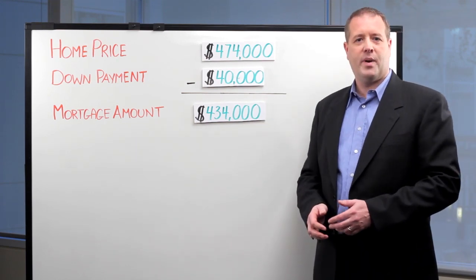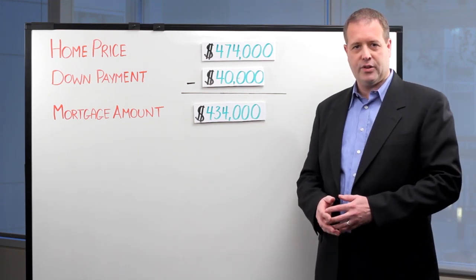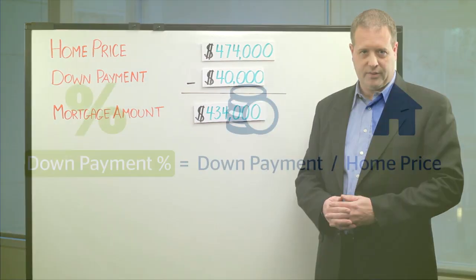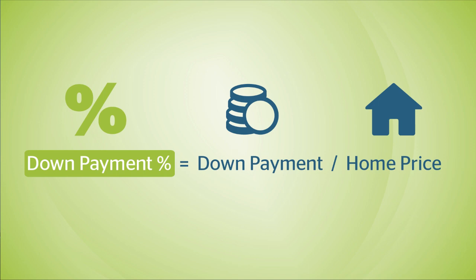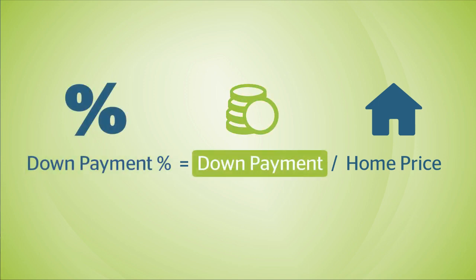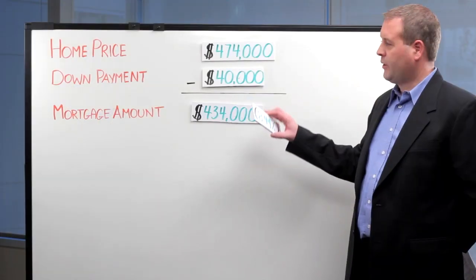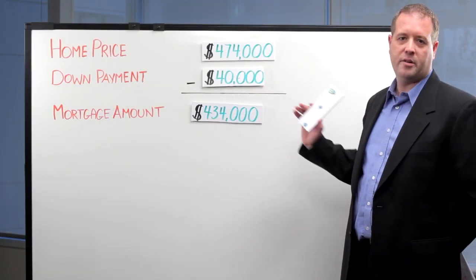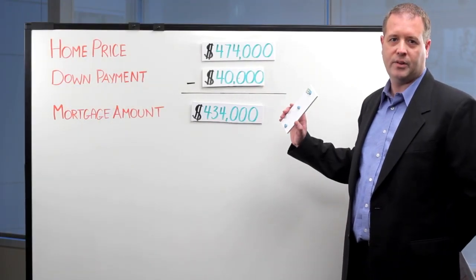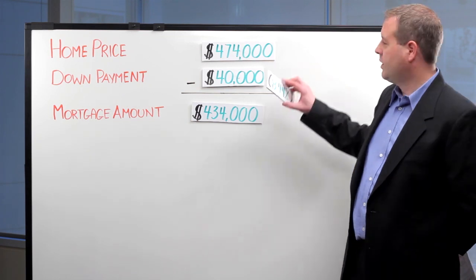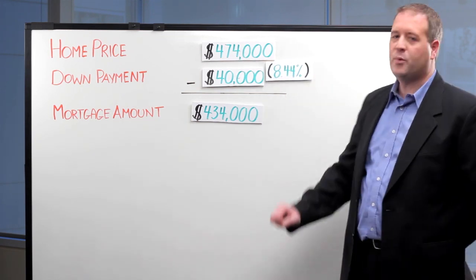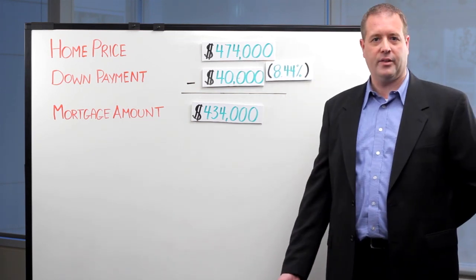Next, we want to calculate the down payment as a percentage of the purchase price. To do that, we're going to divide the down payment of $40,000 by the home price of $474,000. For our example, that's $40,000 divided by $474,000, which gives us 8.44%.